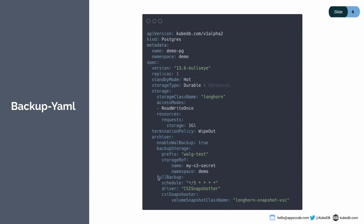Another spec is full backup, where we mention the base backup options — like how frequently we want to deploy our base backup. We also have the CSI driver options, where we've specified CSI snapshotter. As already mentioned, we support two kinds of base backups: one with CSI snapshotter and the other with WAL-G. We've mentioned the driver as CSI snapshotter here, as we're going to deploy our demo PG with the CSI snapshotter driver.